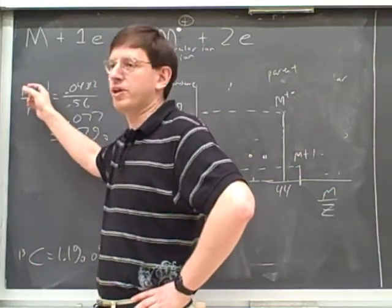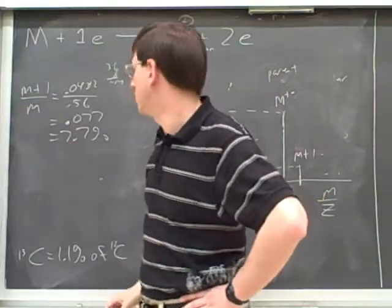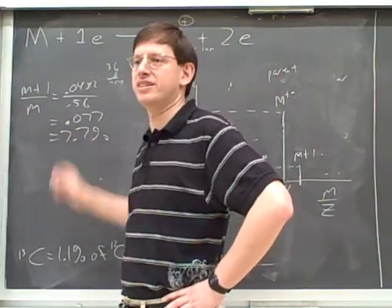You don't want to work out the m to the m plus 1 ratio. You want to put the m plus 1 on top and the m on the bottom, because you want to know what multiple of 1.1% this is going to be.